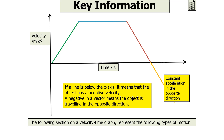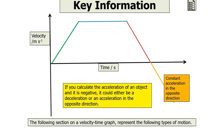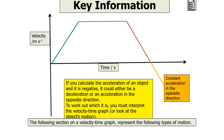If a line is below the x-axis, it means that the object has a negative velocity — a negative value in a vector means the object is travelling in the opposite direction. If you calculate the acceleration of an object and it is negative, it could either be a deceleration or an acceleration in the opposite direction. To determine which, you must either look physically at the object's motion or interpret the velocity time graph.